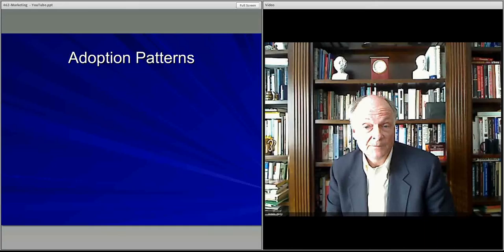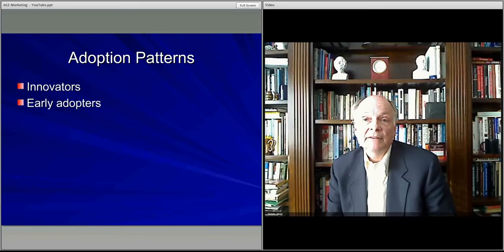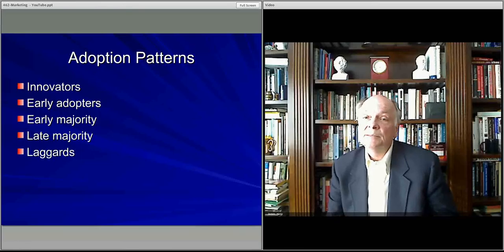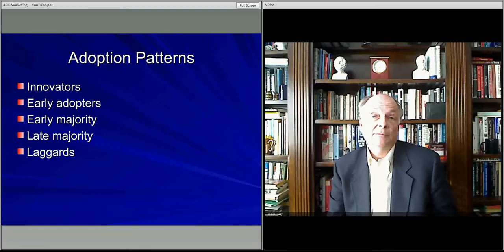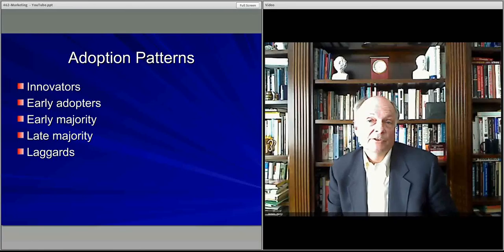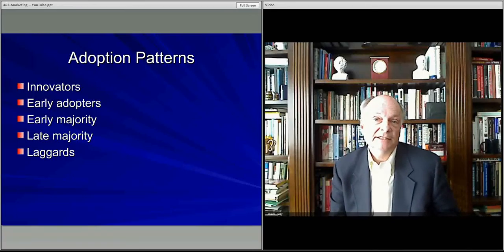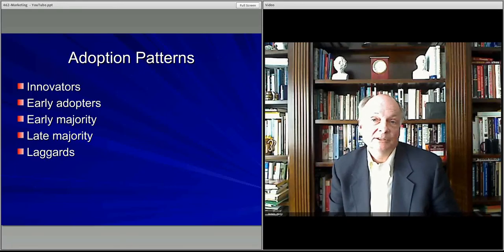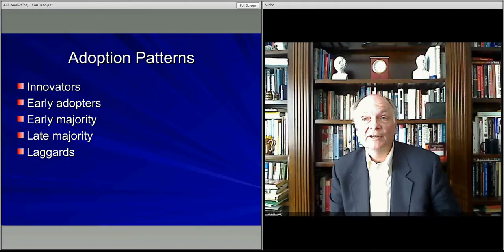There are different types of customers along the S-curve. The early ones at the bottom are innovators — they're really partners, buying the product but helping you develop it. Once it gets developed, we have early adopters. These two early customer segments are generally not that price sensitive; they forgive errors, help improve the product, and want to be the first to have it — willing to pay a premium and deal with the hassle of getting products up and running.